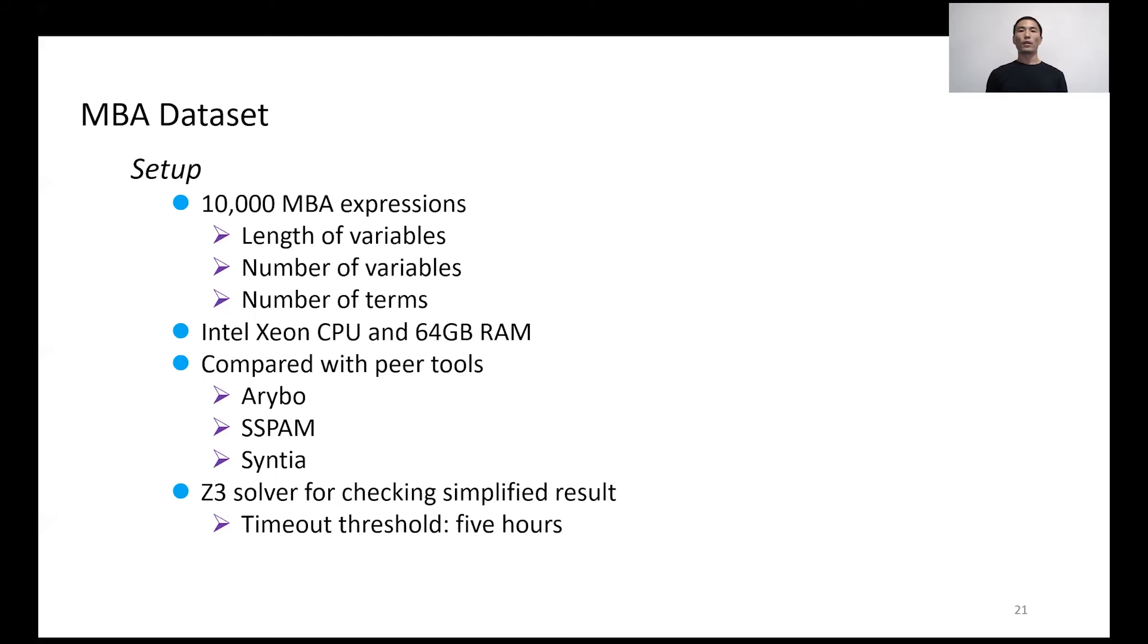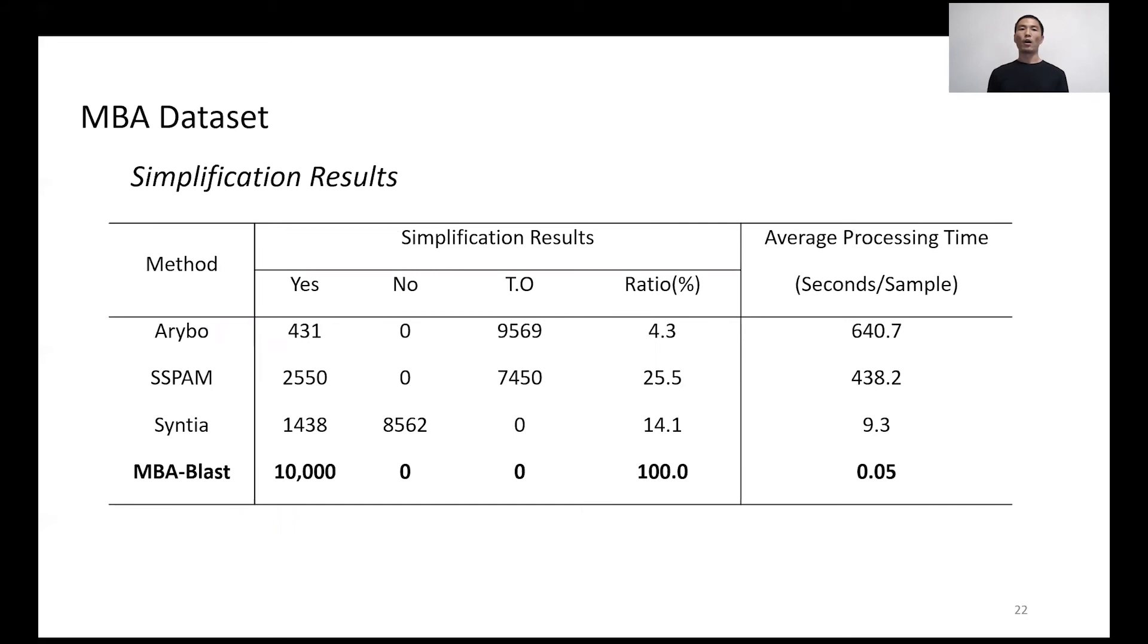We collected existing MBA deobfuscation tools as the comparison baseline: Arybo, SSPAM, and Syntia. After simplification, we use an SMT solver to perform equivalence checking. The results in the table present an obvious gap between other tools and MBA-BLAST. Only MBA-BLAST successfully generates verified simplification results for all MBA samples. The average processing time for each case is less than 0.1 seconds, significantly faster than existing tools.